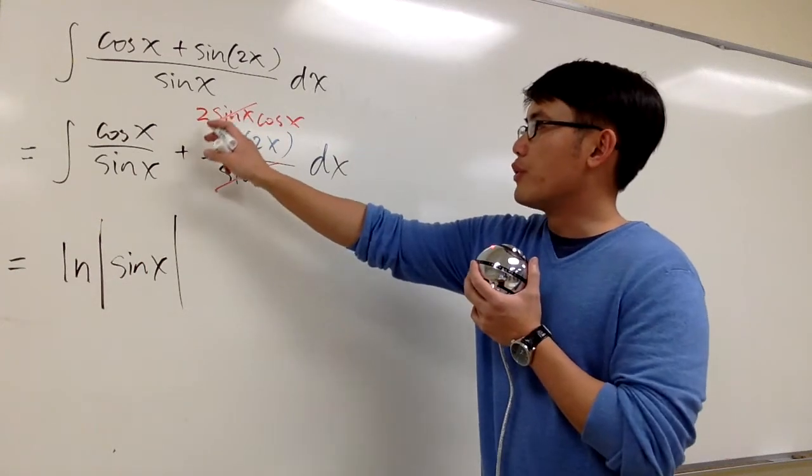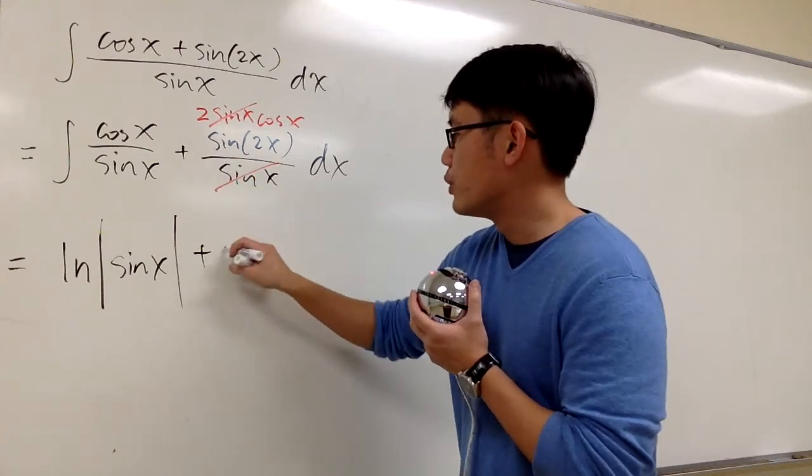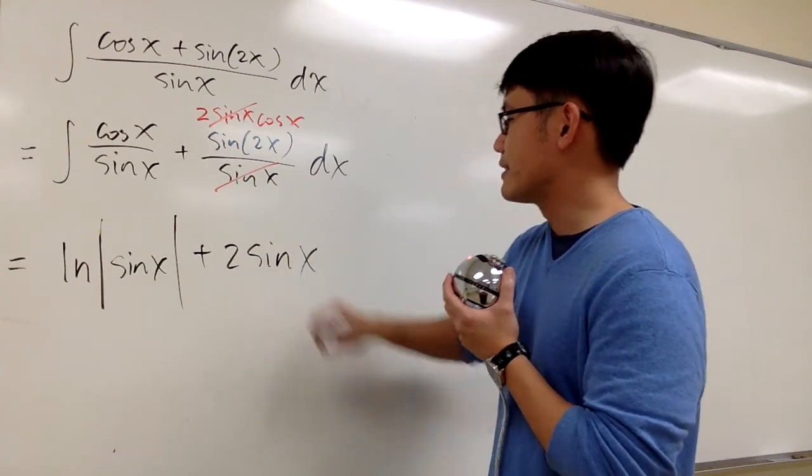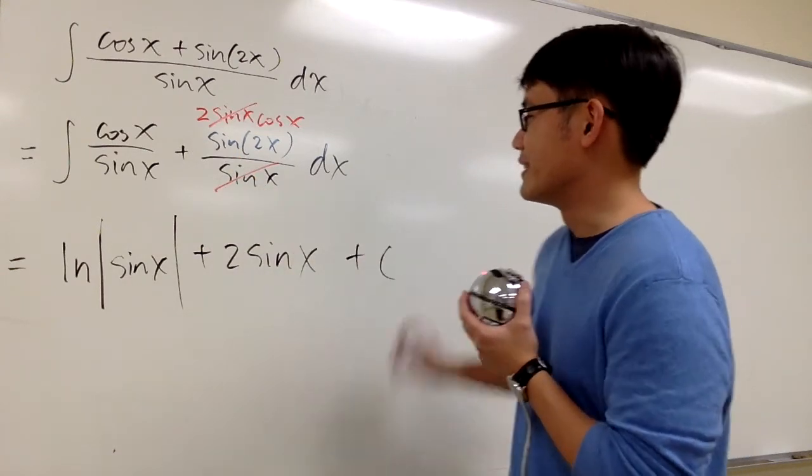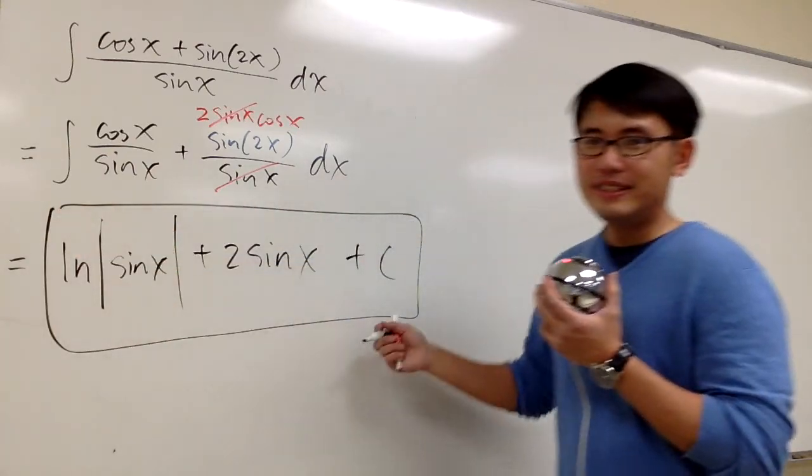What's the integral of 2 cosine x? It's positive 2 sine x. And that's it. Plus c, and we're done. This is the answer.